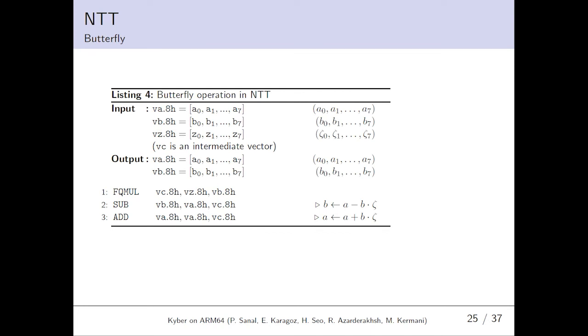Butterfly. In NTT, the state of our computation is performed using butterfly operations. Since n is equal to 2 to the power of 8, the butterfly operations are performed in seven levels. In each level, the serialized representations are filled into eight 16-bit vectors. And each two vectors are updated using butterfly operation in NTT. In the end, the NTT representation is obtained. It uses FQMUL and two add/sub instructions.